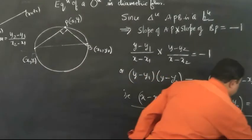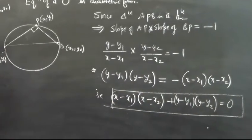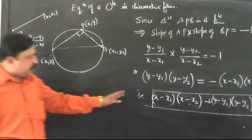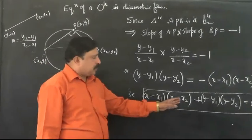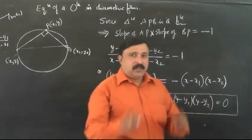So the equation that we are looking for, the diameter form of a circle, is X minus X1 into X minus X2 plus Y minus Y1 into Y minus Y2 is equal to 0.